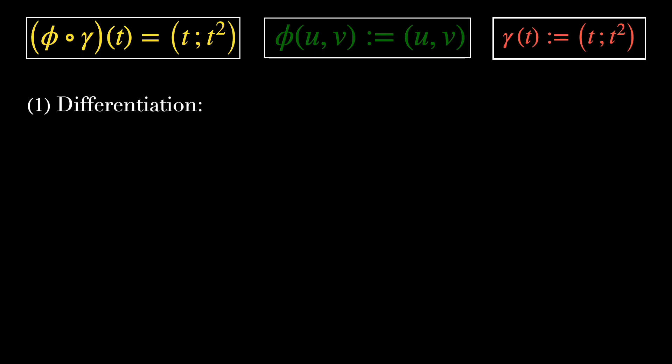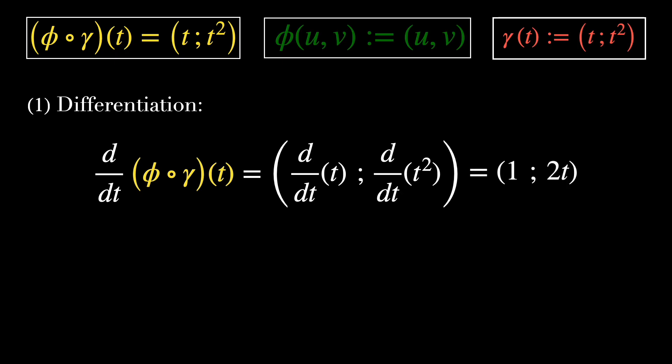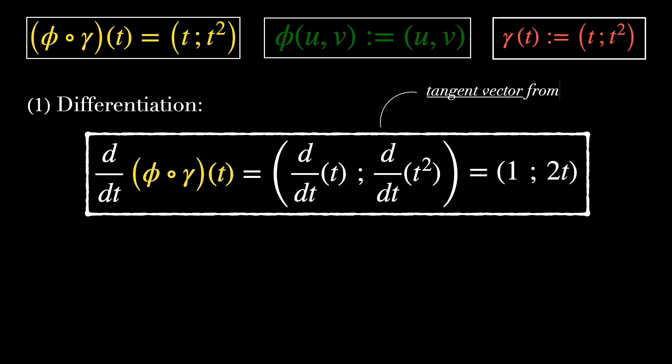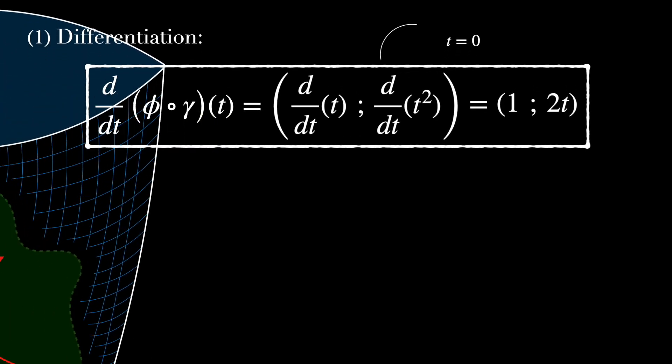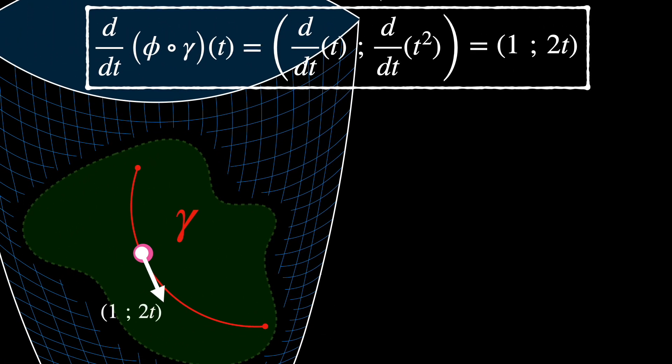The first one is differentiation. The derivative of Phi composed with gamma is the derivative of its coordinates, which results in the vector 1, 2T. This is the tangent vector from T equals 0 to T equals 10. If T represents time, then this vector is the linear or tangent velocity at each point of gamma.